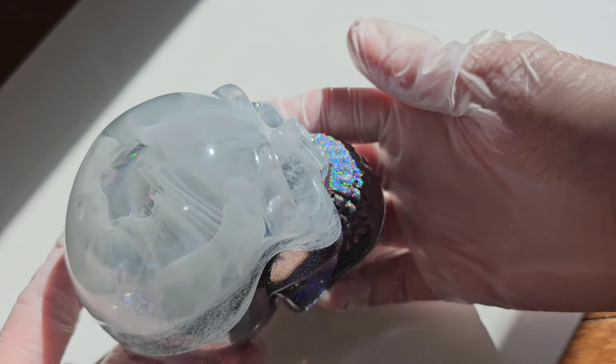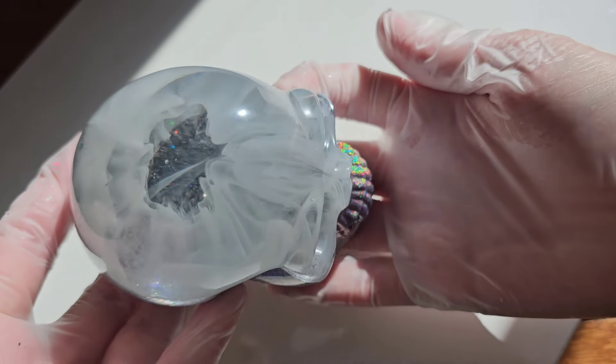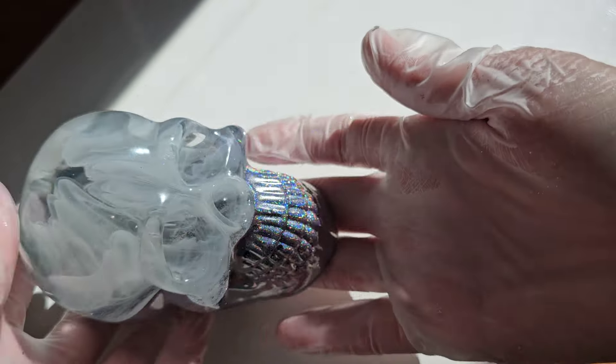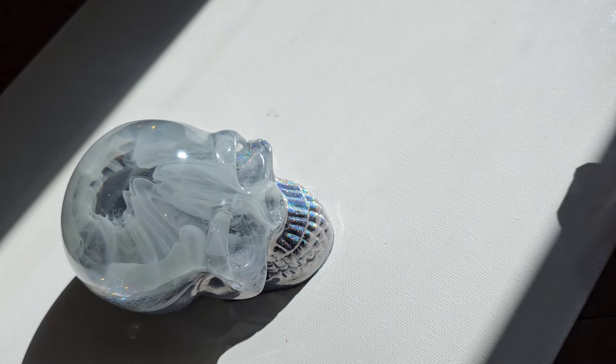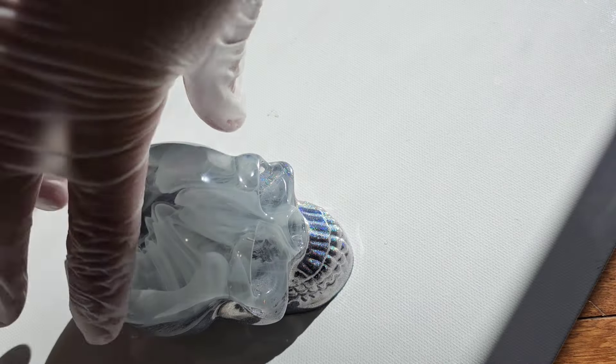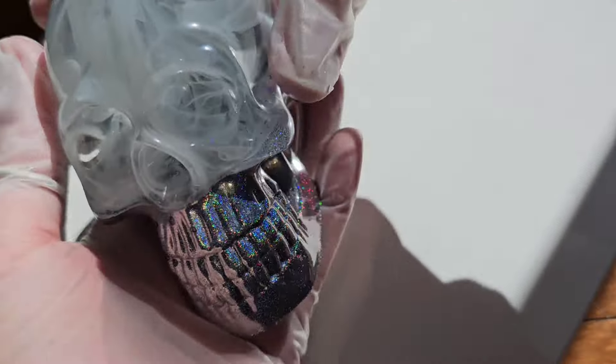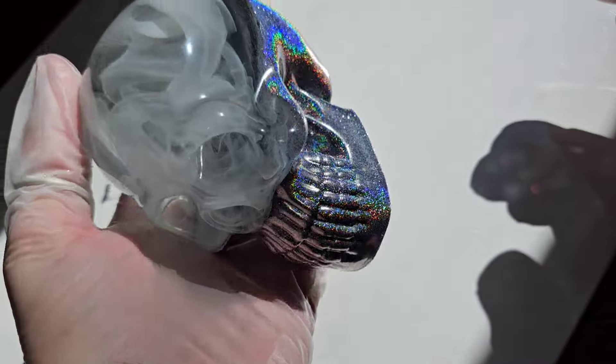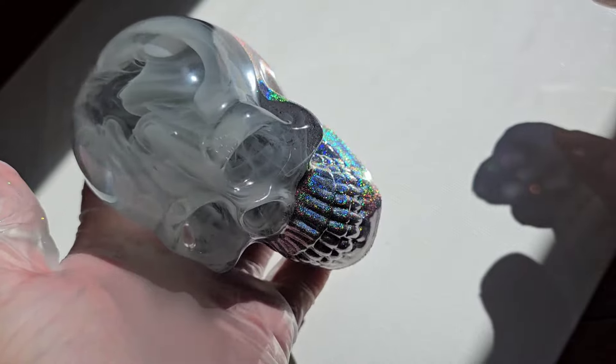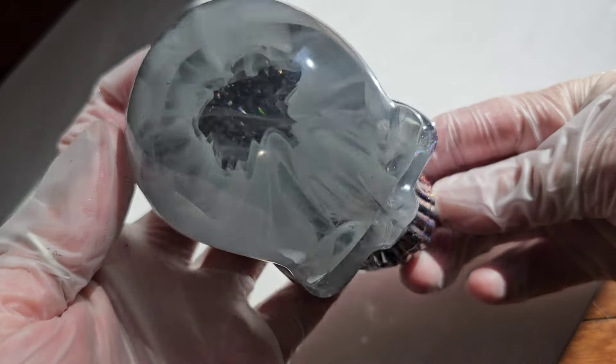See how pretty that holographic glitter is? And the top really looks like smoke. The deeper your mold is, the more pronounced your smoky effect will be. So this mold is perfect for this type of look. Let me know what you guys think of this one down in the comments. I hope you like it and you can get this mold and all the materials I used from Let's Resin.